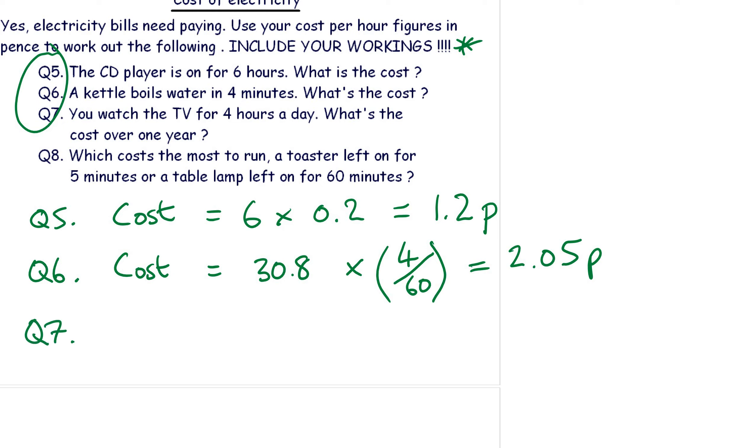And the last one that I'm going to do is question seven. If you watch TV for four hours a day, what's the cost over one year? Wow. So the cost is going to be, how much pence is it per hour? Have a look at your table. It's 1.2 p. Multiply that by four hours, gives you a daily cost of 4.8 p. But it is asking for the cost per year. How many days are there in a year? 365. So the cost is 4.8 multiplied by 365, gives us 1752 pence.